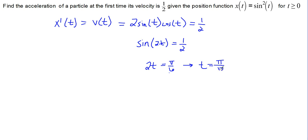Now we have the time at which our velocity is first one-half, and we need to find the acceleration of our particle. So if v of t is equal to 2 sine t cosine t, or this sine of 2t, we can find the derivative of that by taking its derivative using the chain rule.